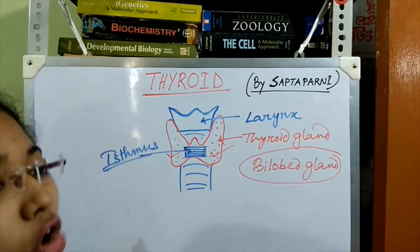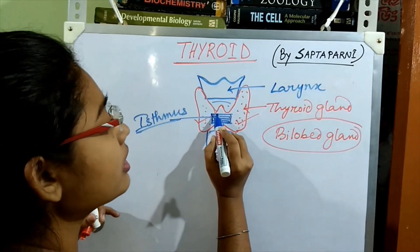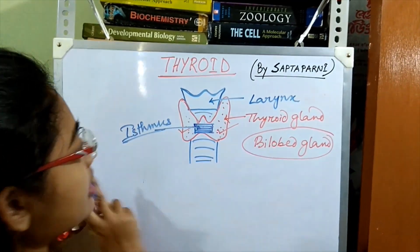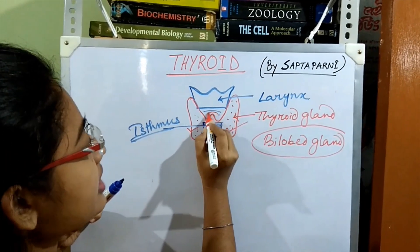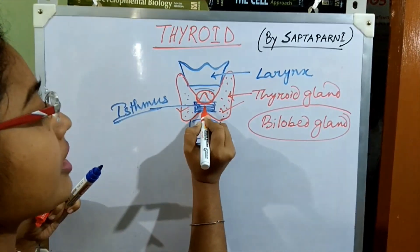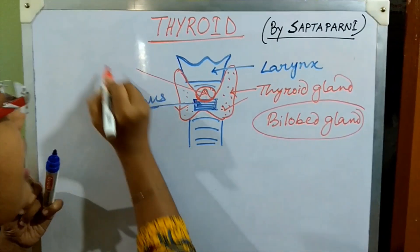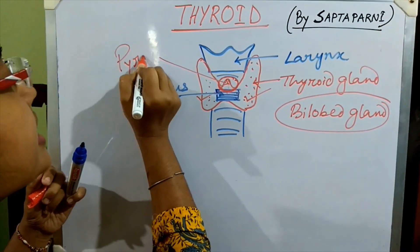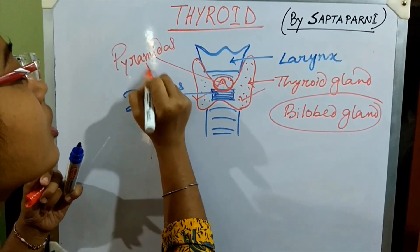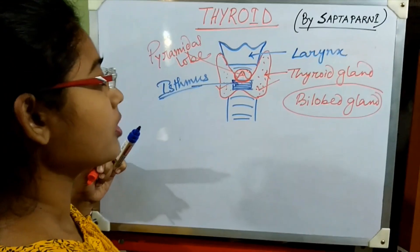Sometimes you may also find an extension of the thyroid gland just above the Isthmus. This upward extension is known as the Pyramidal Lobe, because it looks like a pyramid.